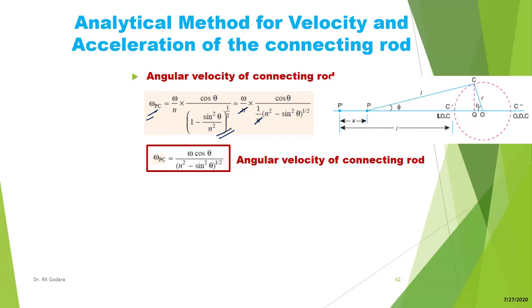After substituting and simplifying, the N terms cancel, and the angular velocity of the connecting rod becomes: ω_PC = ω·cos(θ) / √(N² − sin²(θ)). This is the angular velocity of the connecting rod.